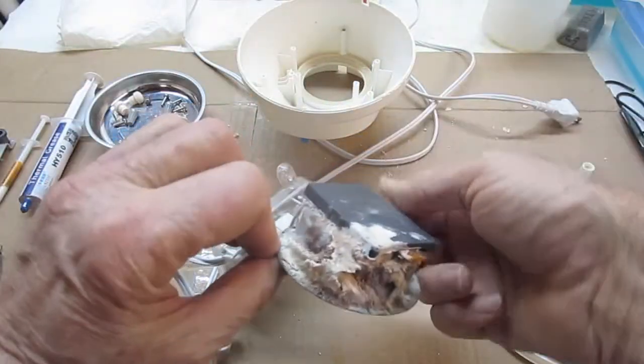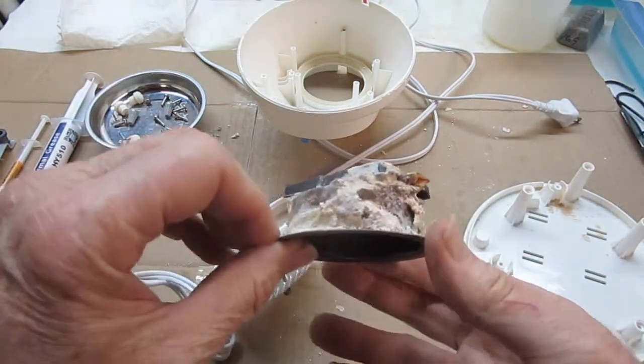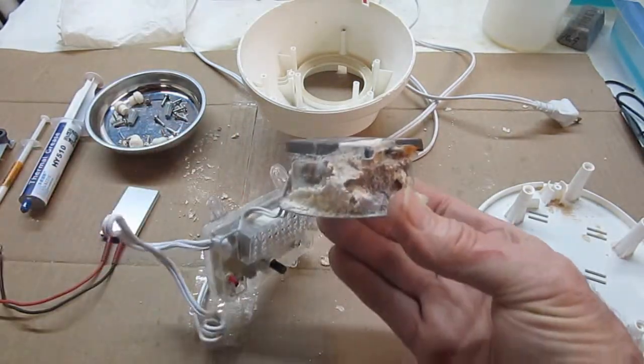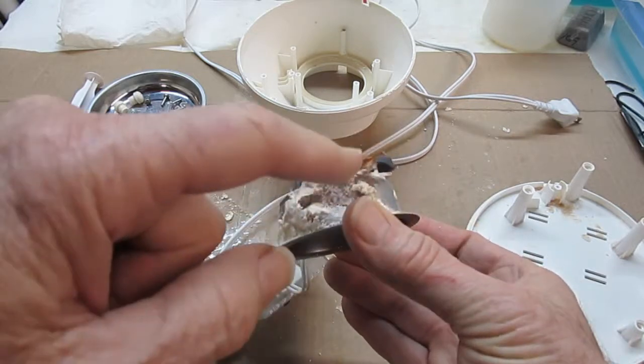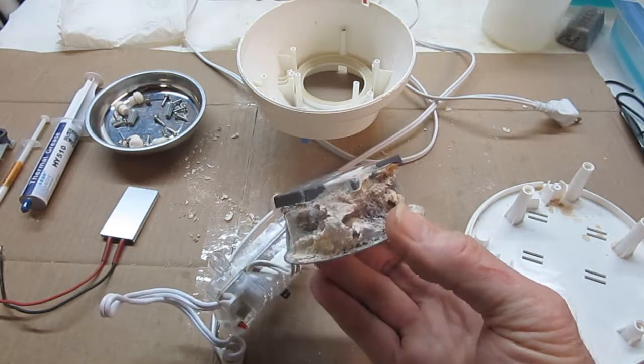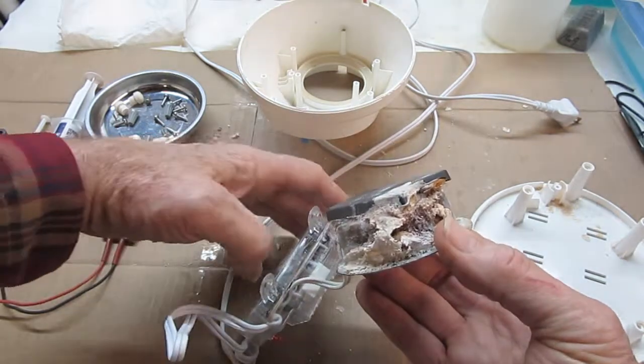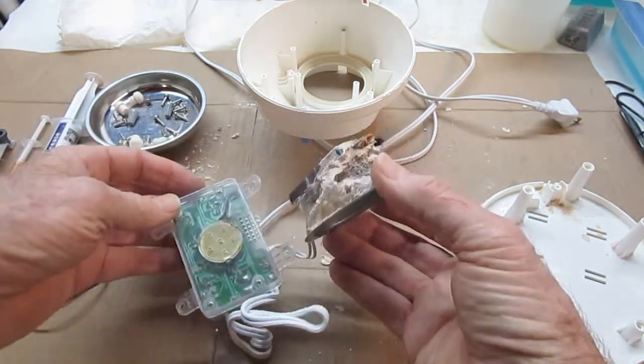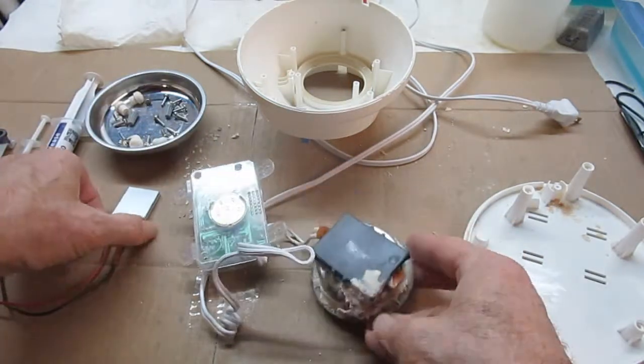Okay, so here the leakage has caused the caustic to eat away into the heating element and this is right on the verge of shorting out. So what I'm going to do with this is I'm going to replace the heating unit.